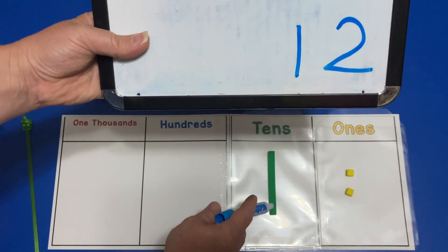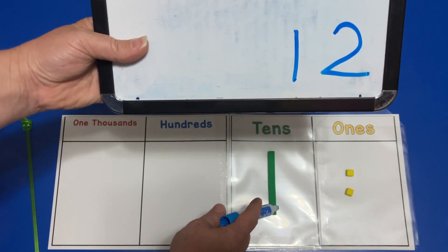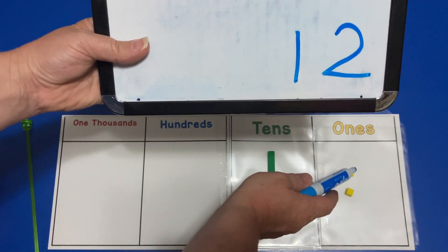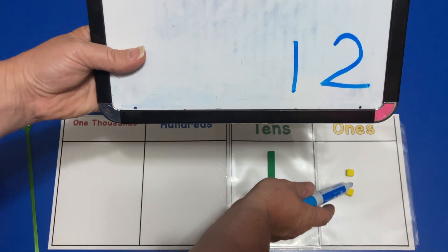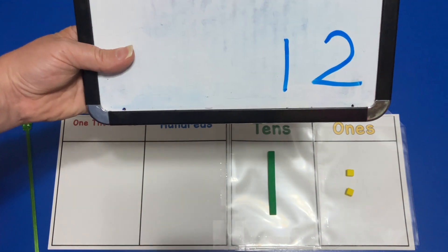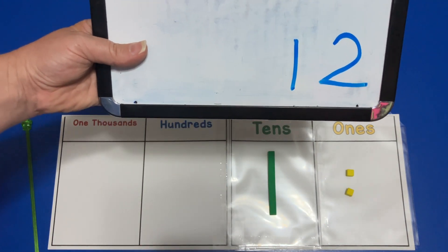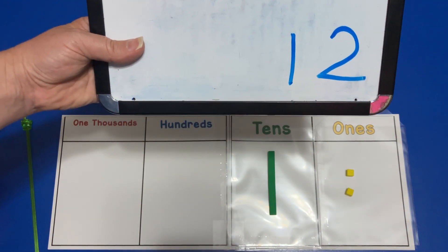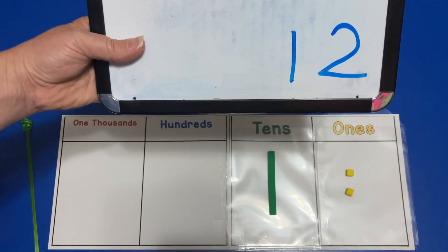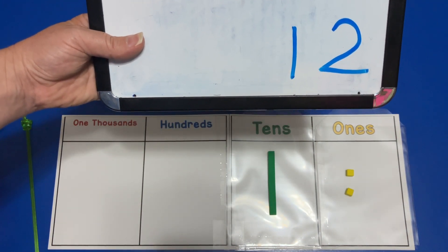Because this group of ten is ten, and when we count on we say eleven, twelve. So the value of our base-10 blocks is twelve.